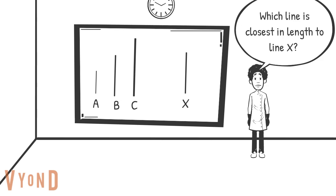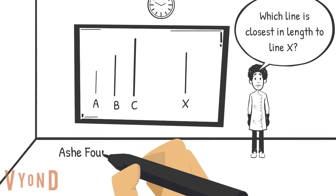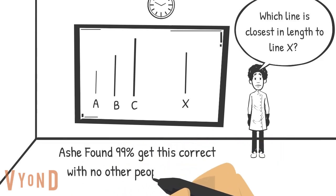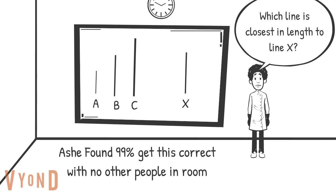Asch needed proof that this task was easy in order to set up his real experiment. He gave study participants 12 similar items asking them to compare lines. Asch found that people got the correct answers by themselves about 99% of the time, so nearly all the time. He can now conclude that this is an easy task where the correct answer is usually obvious.